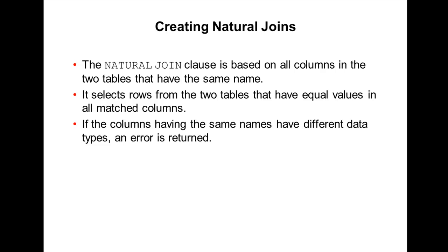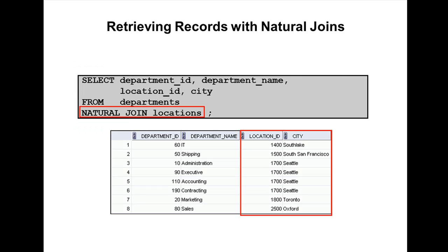Make sure both matching columns have the same data type. If the data types do not match, an error will be returned. Here's an example: SELECT department_id, department_name, location_id, city FROM departments NATURAL JOIN locations.